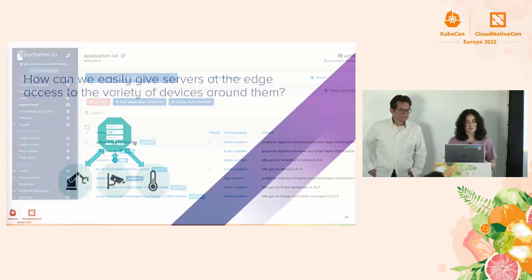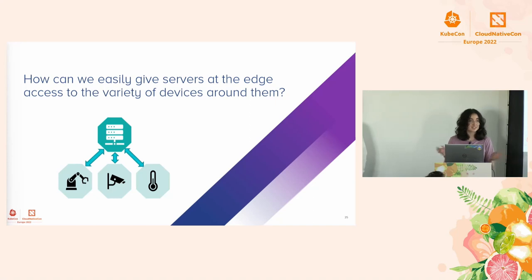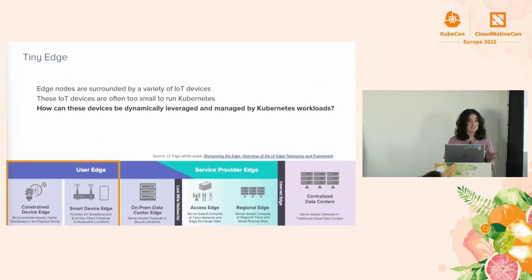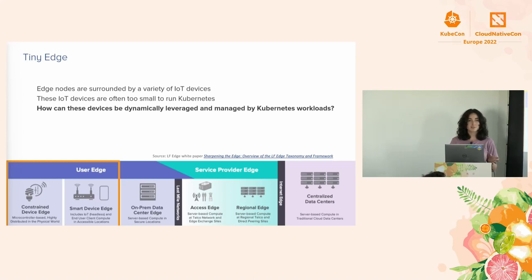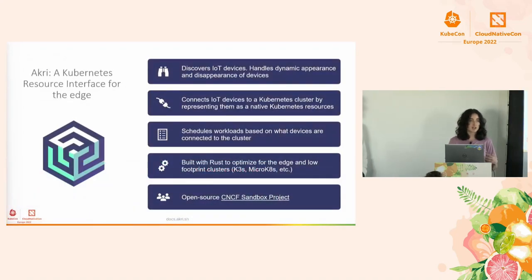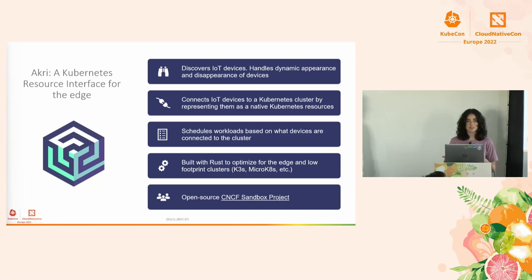Steve just talked about those servers on the edge, but oftentimes around these edge servers there's a bunch of IoT devices gathering really important data. The question becomes: how can we easily deploy workloads to access this data and manage these devices? In the Kubernetes context, these devices are often on the smallest end — either smart devices like IP cameras or constrained devices with no extra compute. If we can't add them to the cluster in a traditional way as a node, a CNCF sandbox project I work on called Akri aims to provide a solution.